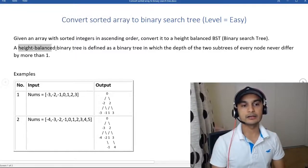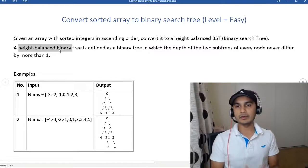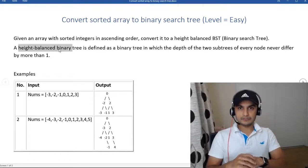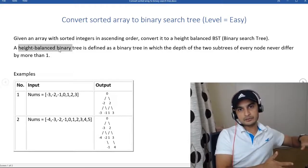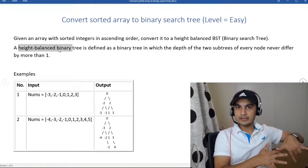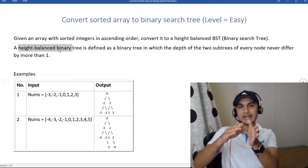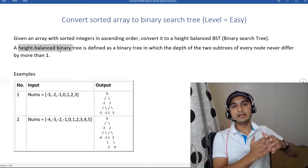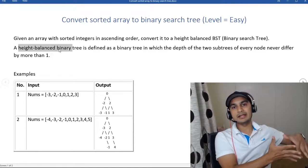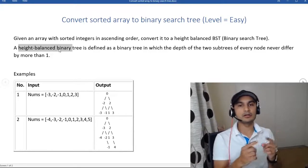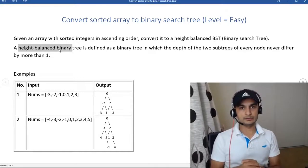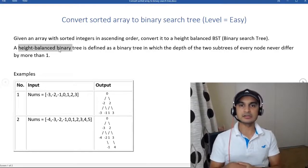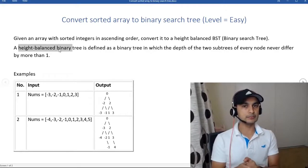The second requirement is that it must be a height-balanced binary tree. A height-balanced tree means the height difference between the complete left subtree and complete right subtree cannot be greater than one. So if the depth of the left tree is five, the depth of the right tree can be four, five, or six — it can differ, but not by more than one.